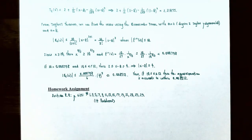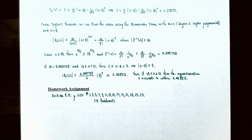This finishes our video on applications of Taylor polynomials. We talked about how to determine the approximation of a function at an input value using Taylor polynomials, and we used the remainder term of Taylor's theorem to determine the accuracy of those approximations. If you have any questions about the examples or the homework for this section, please let me know, and I'll see you in the next video when we talk about three-dimensional coordinate systems.